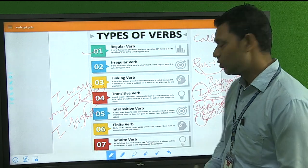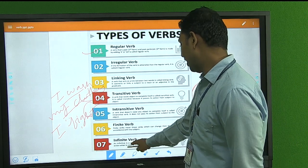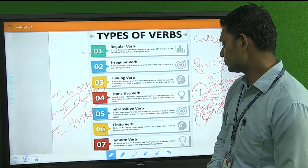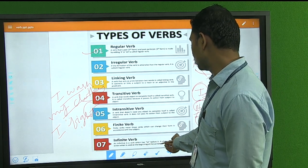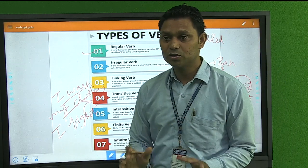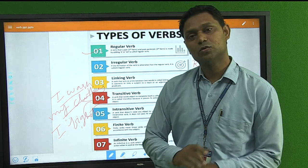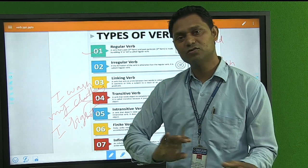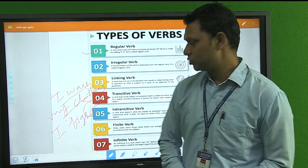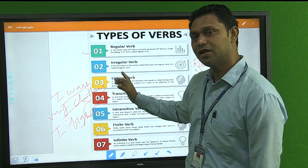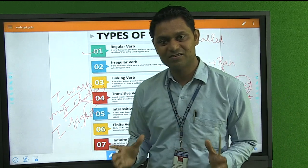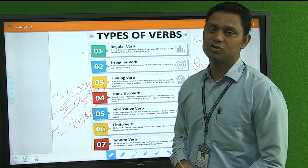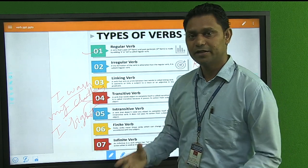The infinitive is a verb that has 'to' before it. When 'to' is used before a verb, the base form of the verb is used — it does not change. So these are all the types of verbs. I hope you have understood. You have to write examples of every type of verb. Thank you very much.